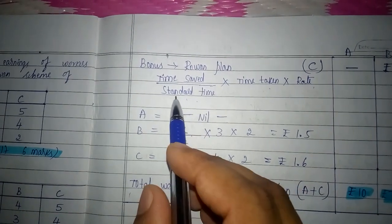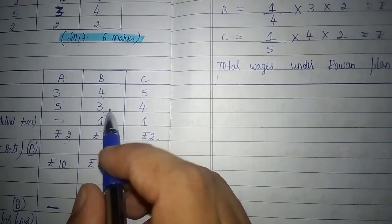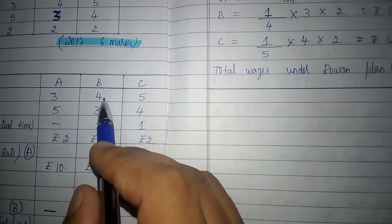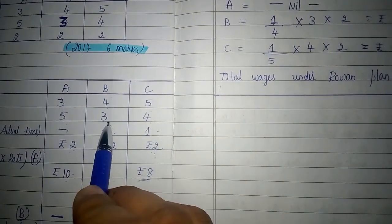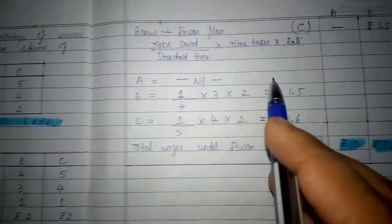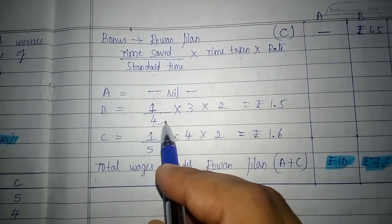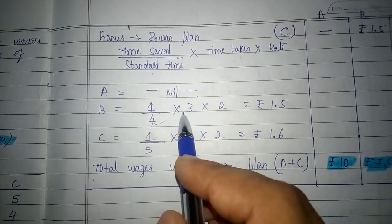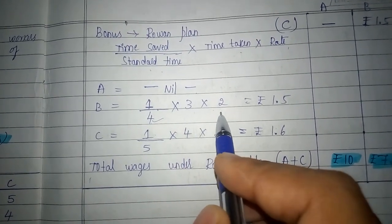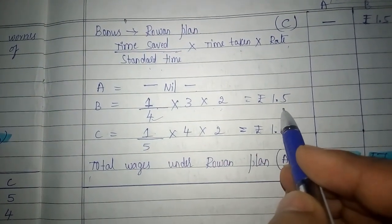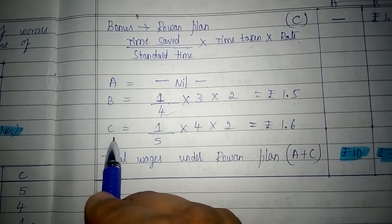In the case of B, he has saved 1 hour and standard time given is 4 hours. Time taken is 3 hours and rate is 2 rupees. So the formula gives: 1 divided by 4 (time saved over standard time), into time taken of 3 hours, into rate per hour of 2 rupees. This gives a bonus of 1.5 rupees.